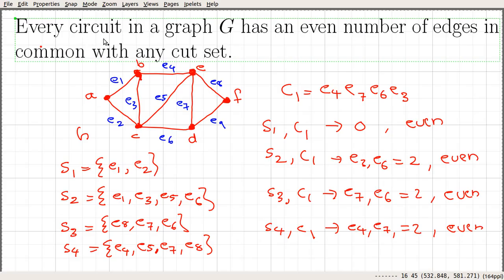So anyway, we are going to prove this: every circuit in a graph has an even number of edges in common with any cut set. This is true for any cycle in the graph — you can try with different cycles and consider other cut sets as well. Let us go and prove the statement.